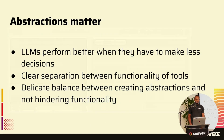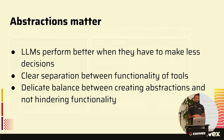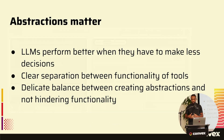So now I'm going to dive into a few of the learnings I've had building Chef. The first thing is that abstractions matter. LLMs perform better when they have to make fewer decisions. A great example of this is that we had to scope down our component APIs when building Chef, because a lot of our components have all these different options, and LLMs often got confused trying to pick one thing over another.